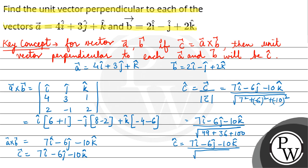upon √(49 + 36 + 100), that is √185. So this is the unit vector perpendicular to each of the vectors a and b. I hope you understood it well, best of luck.